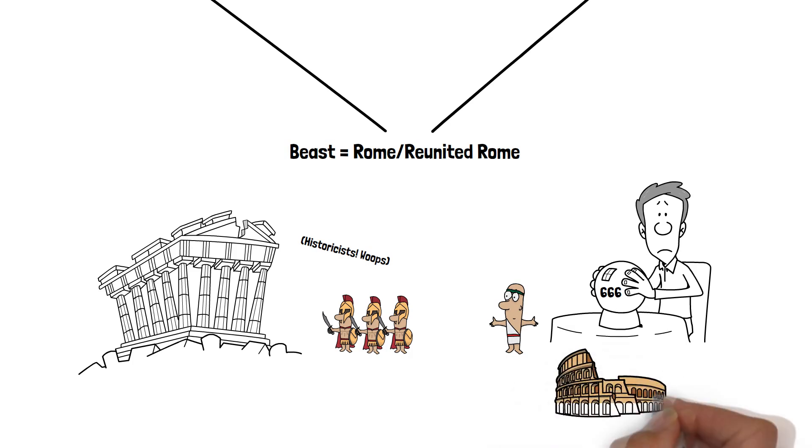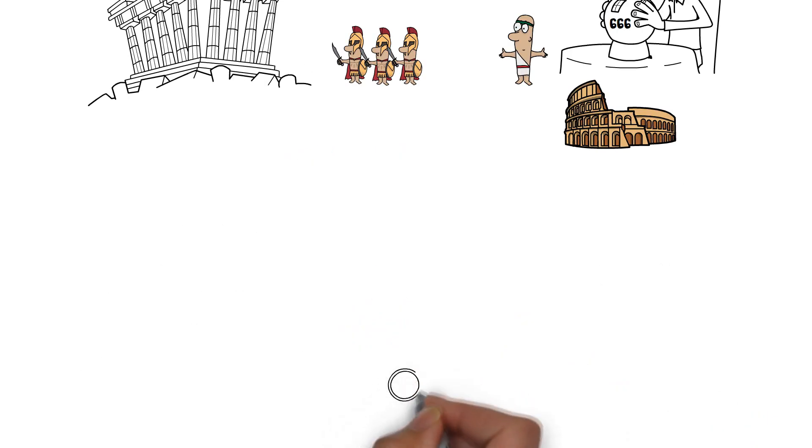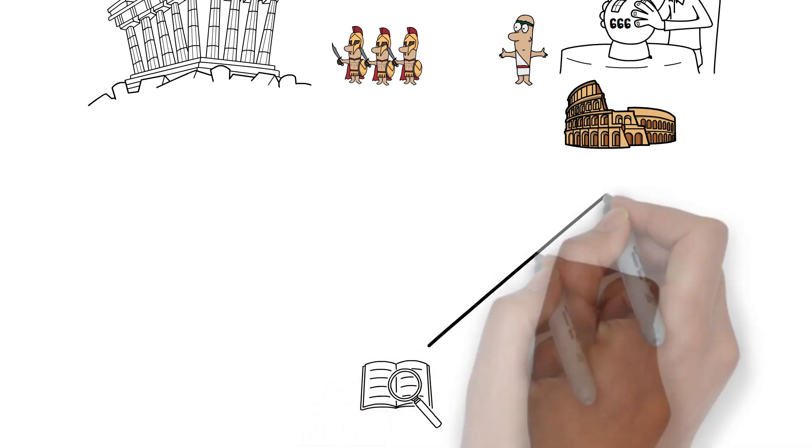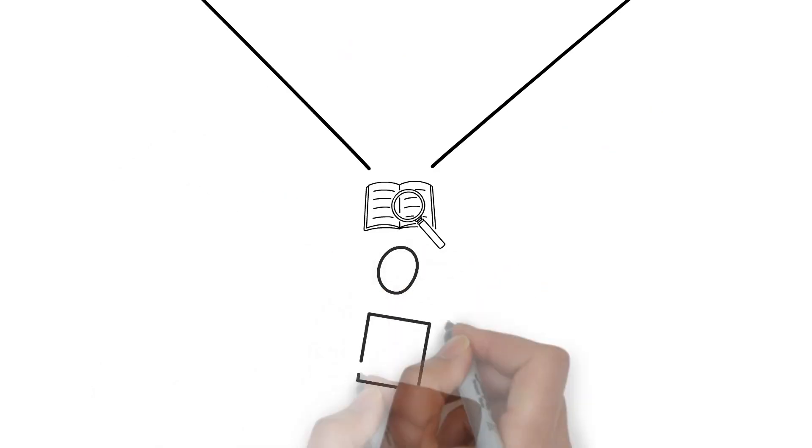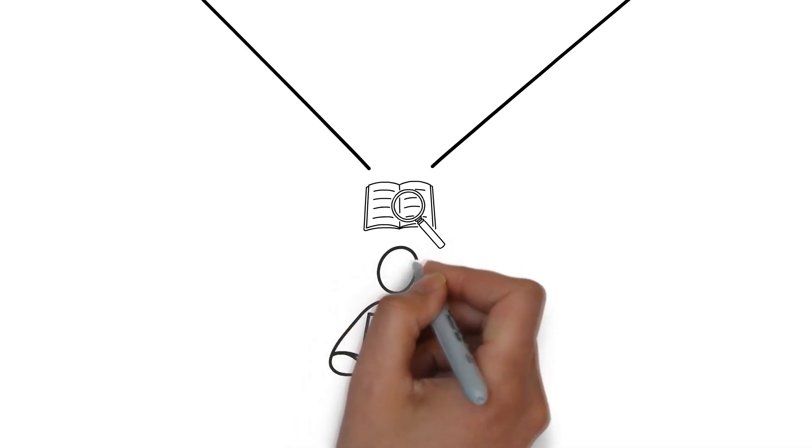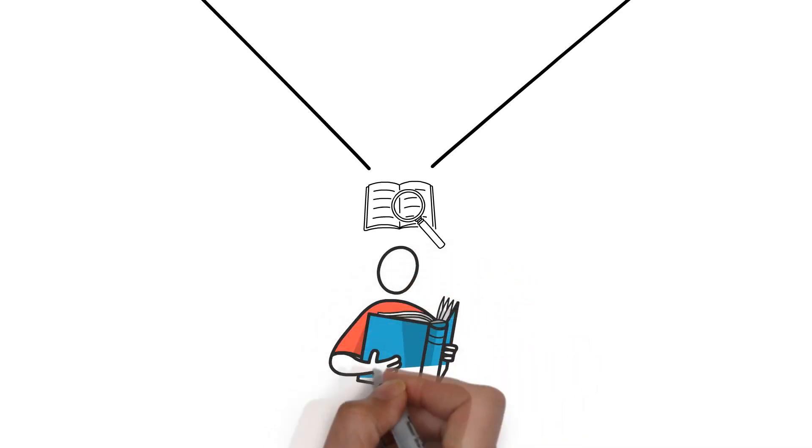Much of the above speculation regarding Rome as the Beast tends to stem from complications of dealing with symbology in the Book of Revelation. I do have a lot of sympathy for both sides of the eschatological divide in this regard, but with some careful interpretation of the symbols regarding the Beast, I do believe that the truth will become clear.